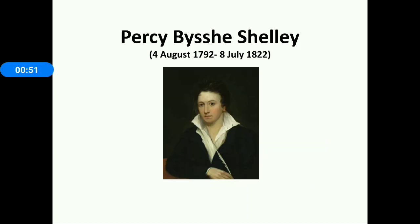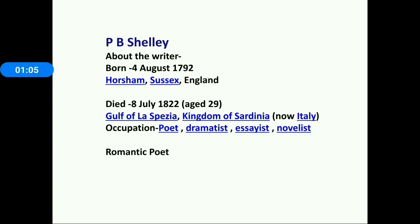Percy Bysshe Shelley was born on 4th August 1792 and he died on 8th July 1822. He was born in Horsham, Sussex, England, and he died while on a voyage in the Gulf of La Spezia, Kingdom of Sardinia — now Italy. His occupation was as a dramatist, essayist, and novelist.